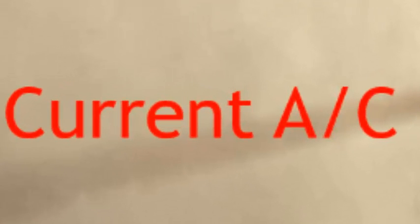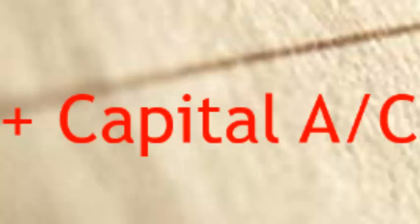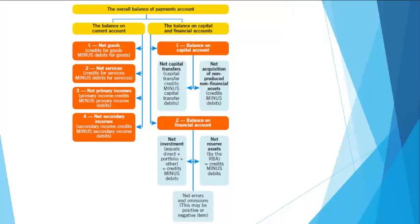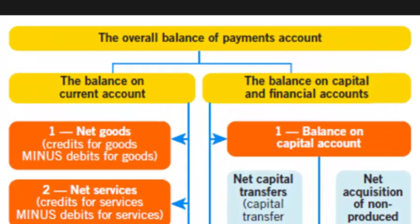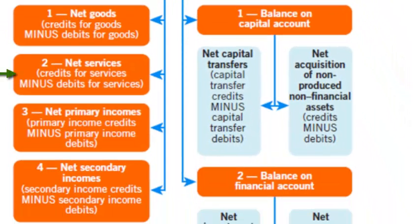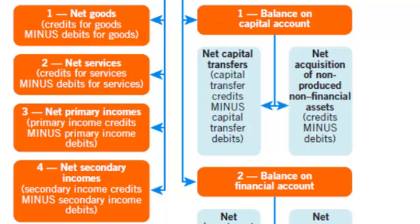So if we have a current account deficit, which is largely in a minus, we need a capital account in a positive — a large debit plus a large credit equalling zero. That's what the balance of payments is all about. Let me summarise that using this flowchart. The overall balance of payments account must equal zero. The balance on the current account — net goods plus net services giving us the balance on goods and services, plus net primary income plus secondary income — the non-reversible transactions must be balanced by the balance on the capital account, which covers reversible transactions such as transfers, loans, and investments.